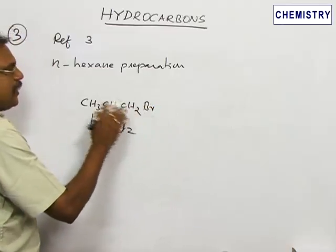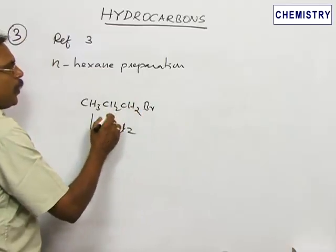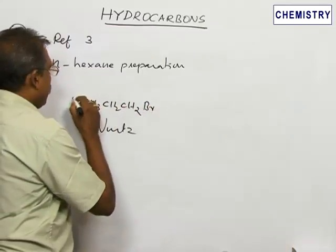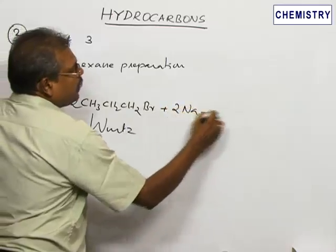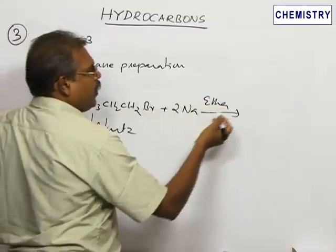Therefore, the best method for preparing N-hexane is from 1-bromopropane. See, 2 molecules will react plus 2 sodium atoms, and here in ether, we have the doubling of carbons.